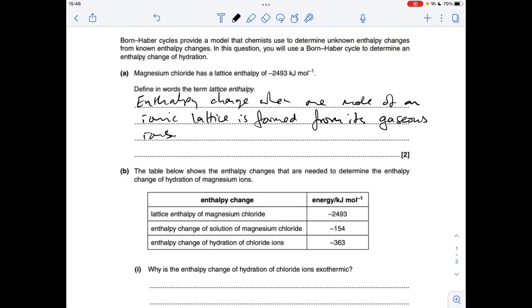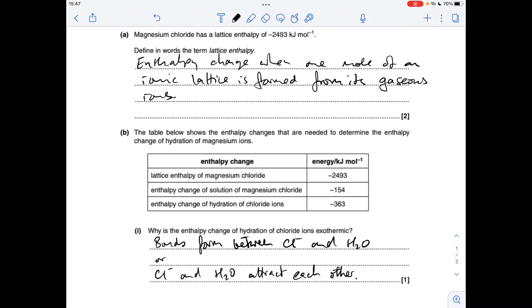So part a: we've got to define the term lattice enthalpy. That's the enthalpy change when one mole of an ionic lattice is formed from its gaseous ions. First part of b: why is the enthalpy change of hydration of chloride ions exothermic?